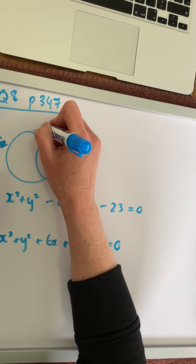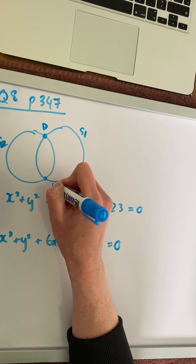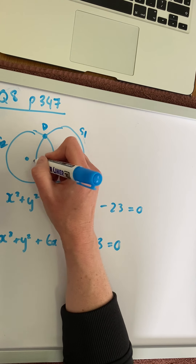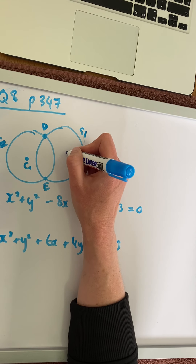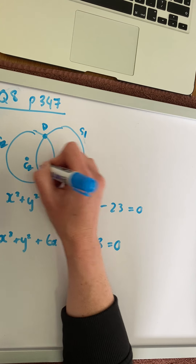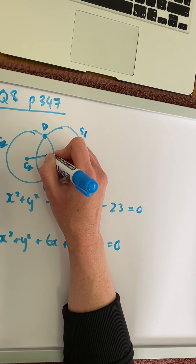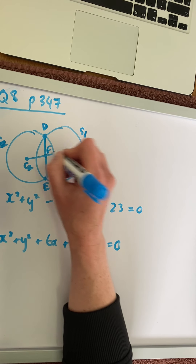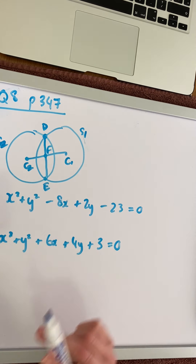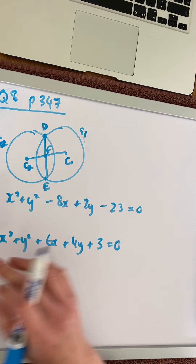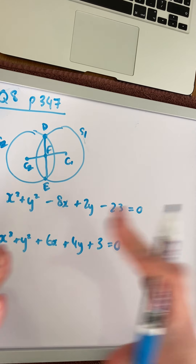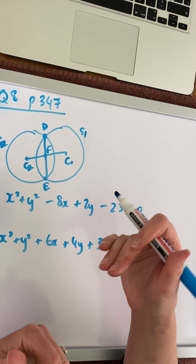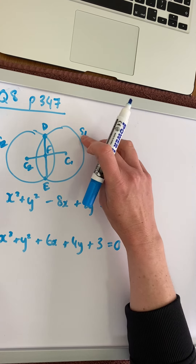On the diagram, we have points D and E, which are the points of intersection of the circles. We have center 2 and center 1, and we have point F, which is the point of intersection of these two lines. Because the two circles overlap, we can't use the distance between the centers, so we have to come up with a different way of working.